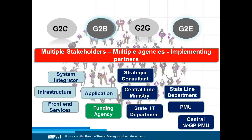Looking at the stakeholders, when we talk of stakeholders, we have been talking primarily of citizens and businesses. If you look at the canvas of e-governance, projects are intended for different stakeholders — like citizens, so G2C projects are there, government to citizens. Similarly for businesses, G2B. Then government to government is G2G, and government to employees is G2E. Managing these projects is always a challenge, especially when projects involve multiple stakeholders with different expectations.